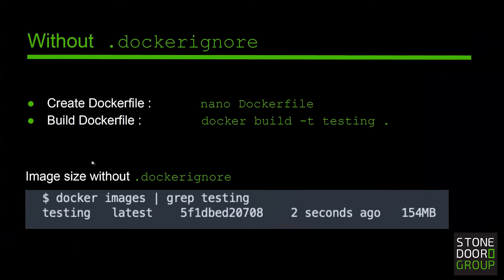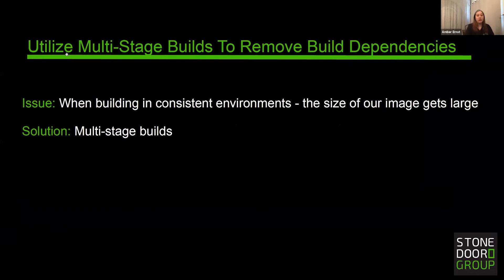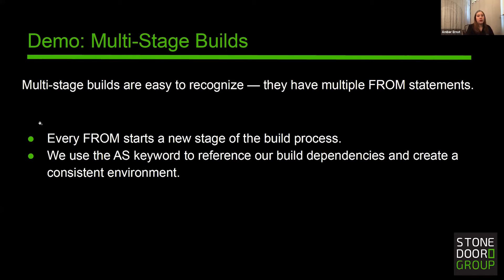Now, keeping in the theme of keeping our images small, I also want to show you utilizing multi-stage builds to remove build dependencies. One issue that we can run into when building in consistent environments is that the image will get very large because images include all of the build-time dependencies that are not necessary at runtime. We can utilize multi-stage builds to address this and reduce the size of our image, which means faster build times and fewer resources consumed. Multi-stage builds are easy to recognize — they have multiple FROM statements, and every FROM statement starts a new stage of the build process. We use the AS keyword to reference our build dependencies and create a consistent environment.